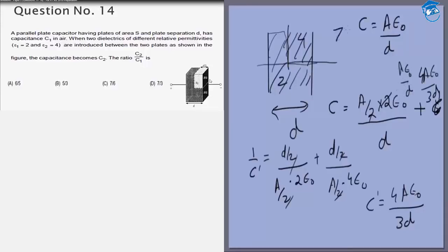So the ratio of them is 7 by 3. So my answer is 7 by 3 which is option D. Thank you.